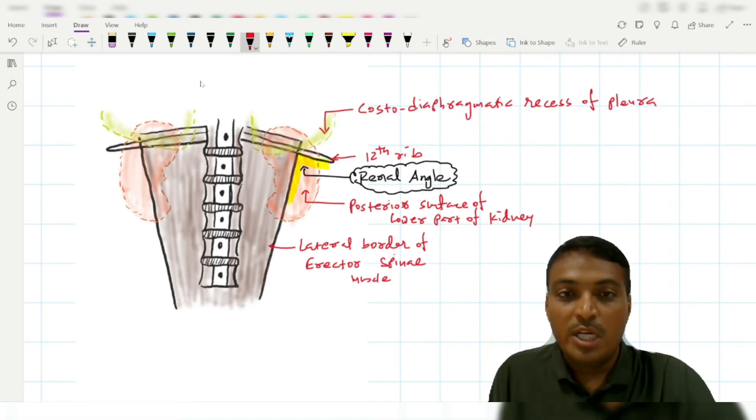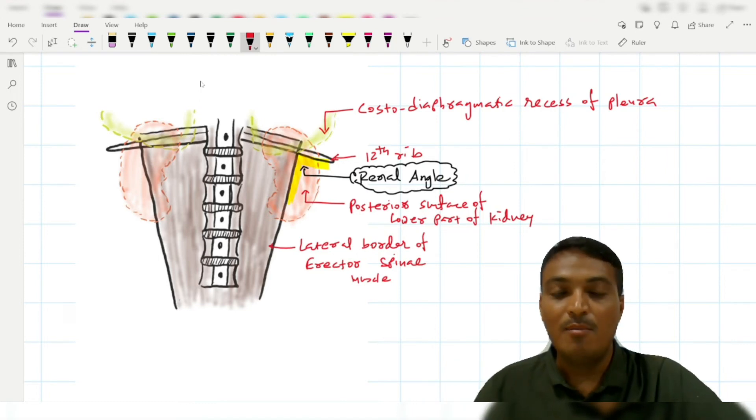In some normal individuals, the 12th rib is very short and fails to reach the lateral border of the erector spinae muscle. In that case, the 11th rib is mistaken as the 12th rib, and the falsely identified renal angle, which is formed by the 11th rib and the lateral border of the erector spinae, will encroach the costodiaphragmatic recess of the pleura.